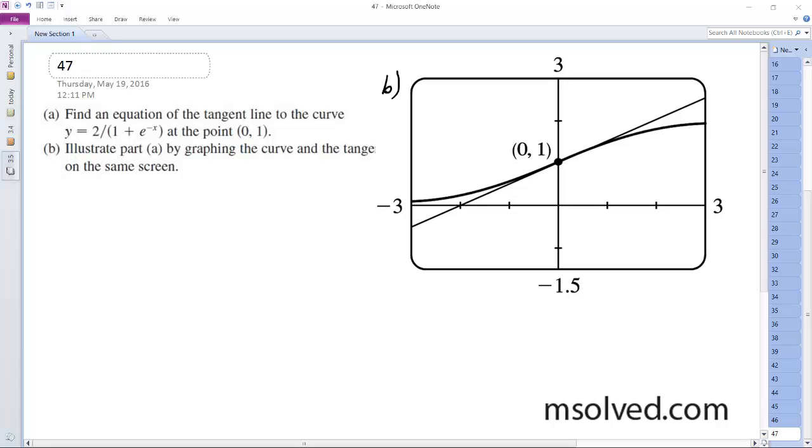What I'm going to do here is find the derivative of y equals 2 over 1 plus e raised to the negative x.